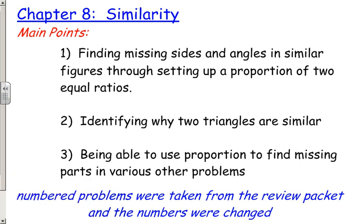This is a mini lesson about chapter 8, which deals with similarity. In this section we're going to be able to find missing sides and angles in similar figures through setting up a proportion of two equal ratios. We're going to identify why two triangles are similar and then use proportions to find missing sides and parts in various other kinds of problems.